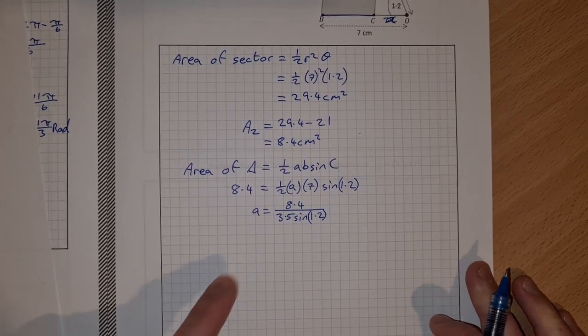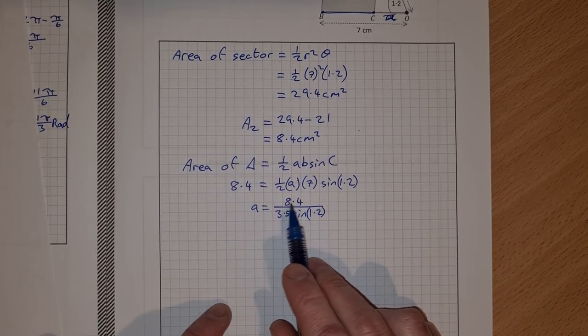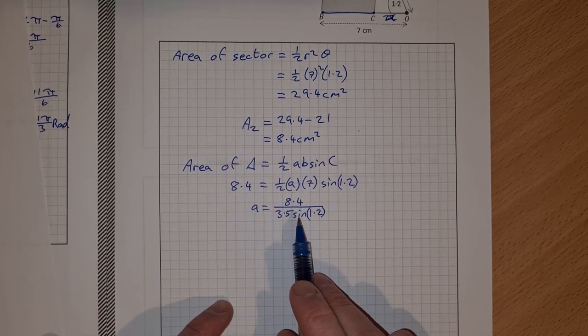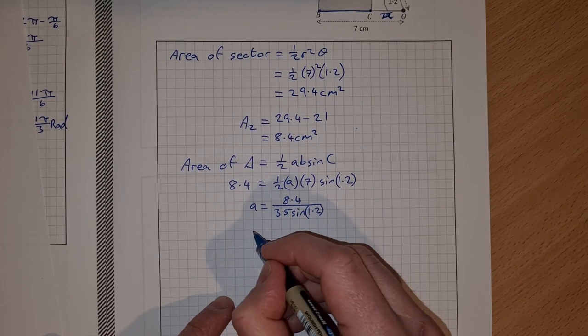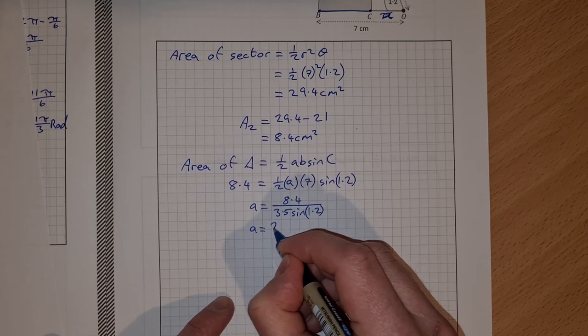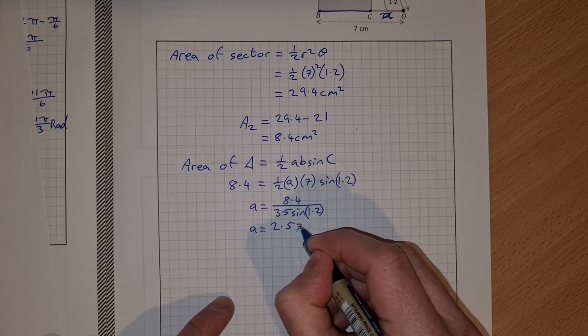So if you do 8.4 divided by 3.5 sine 1.2, make sure your calculator is in radians, you get A is equal to 2.575.